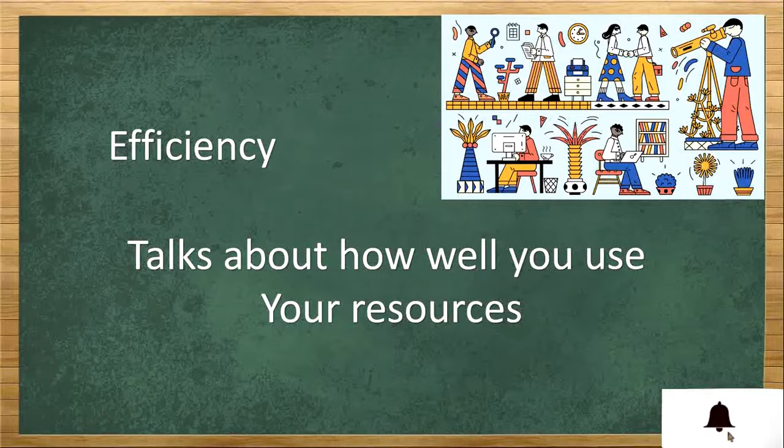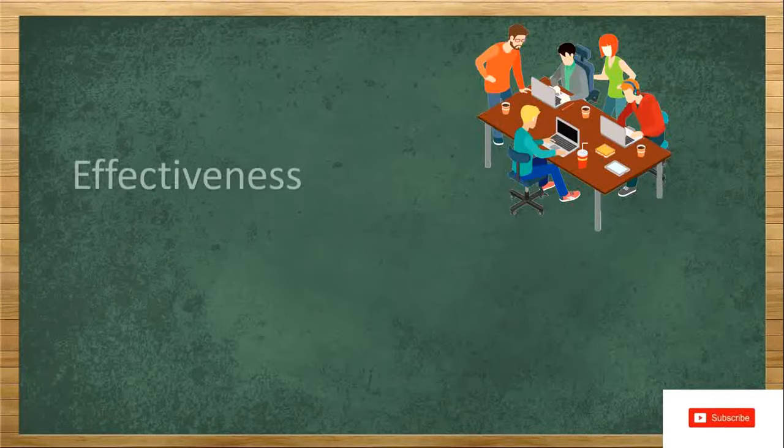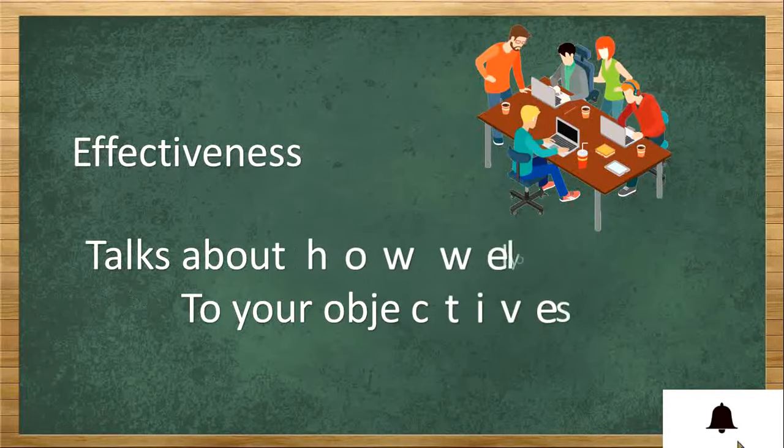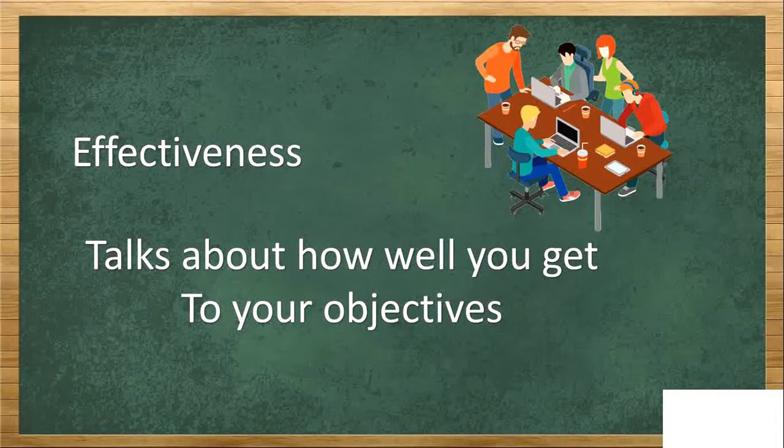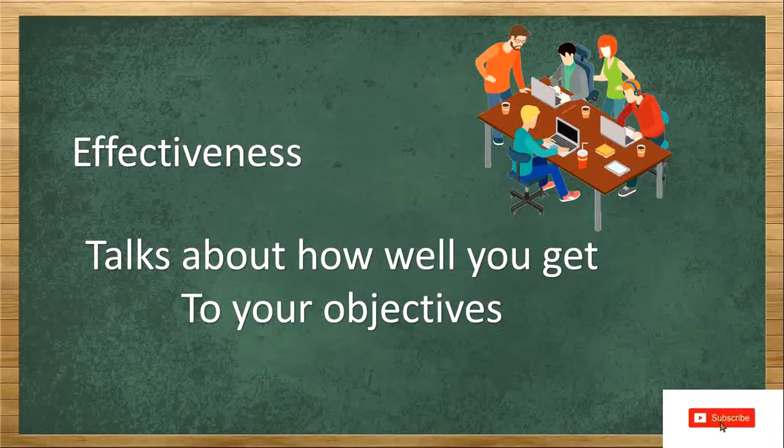On the other hand, effectiveness talks about how well you get to your objectives. So basically it means that you are doing the right thing at the given time. If you find out the key difference, efficiency is doing the thing right and effectiveness is doing the right thing.